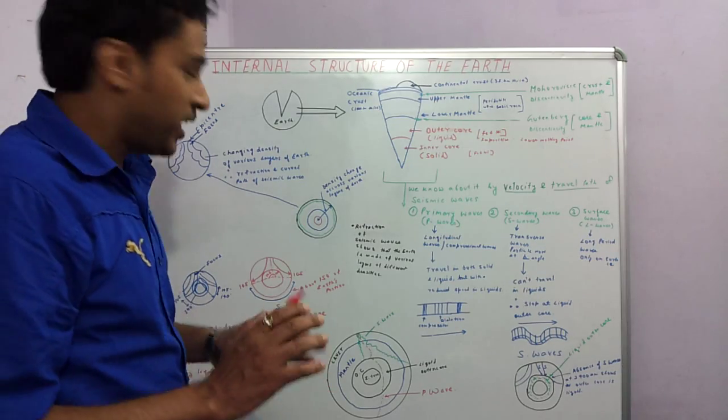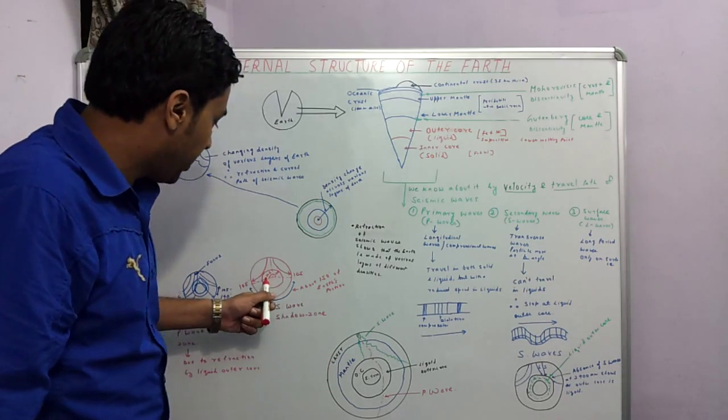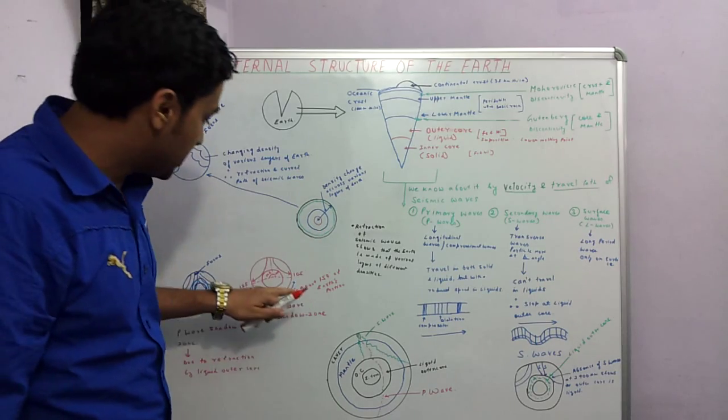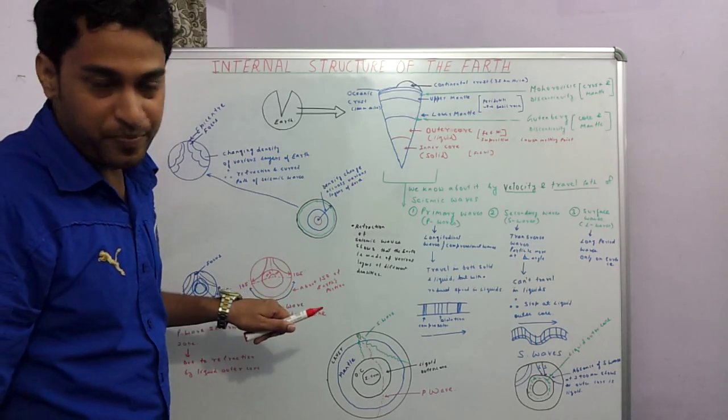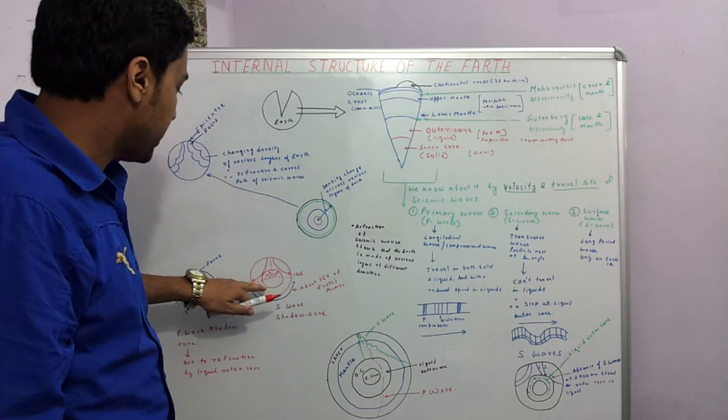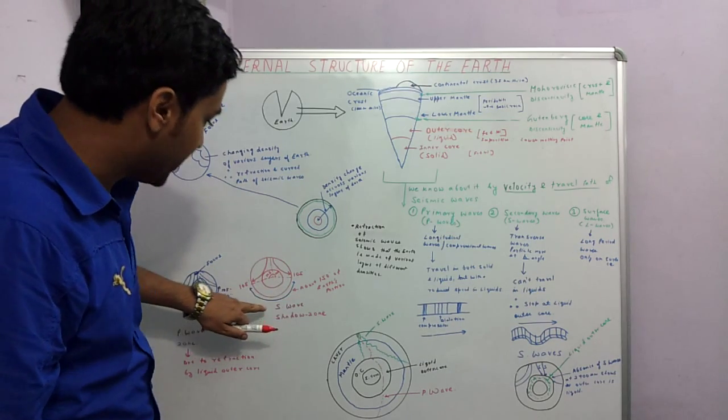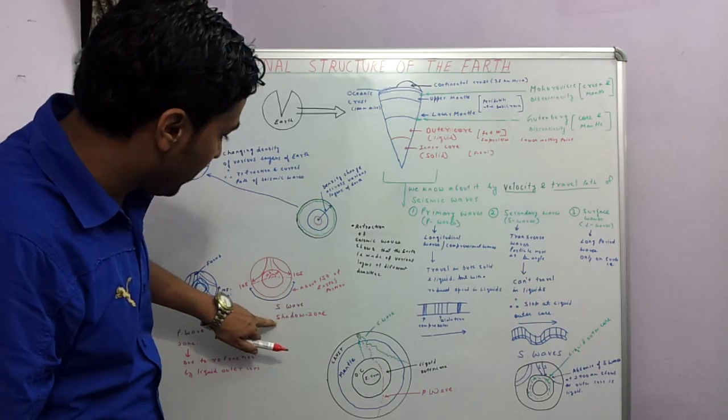Whereas if we talk about the S waves, the S waves cannot travel through the liquids. Since the outer core is in a liquid state, the S waves cannot travel through the outer core. And that's why we get an S wave shadow zone.